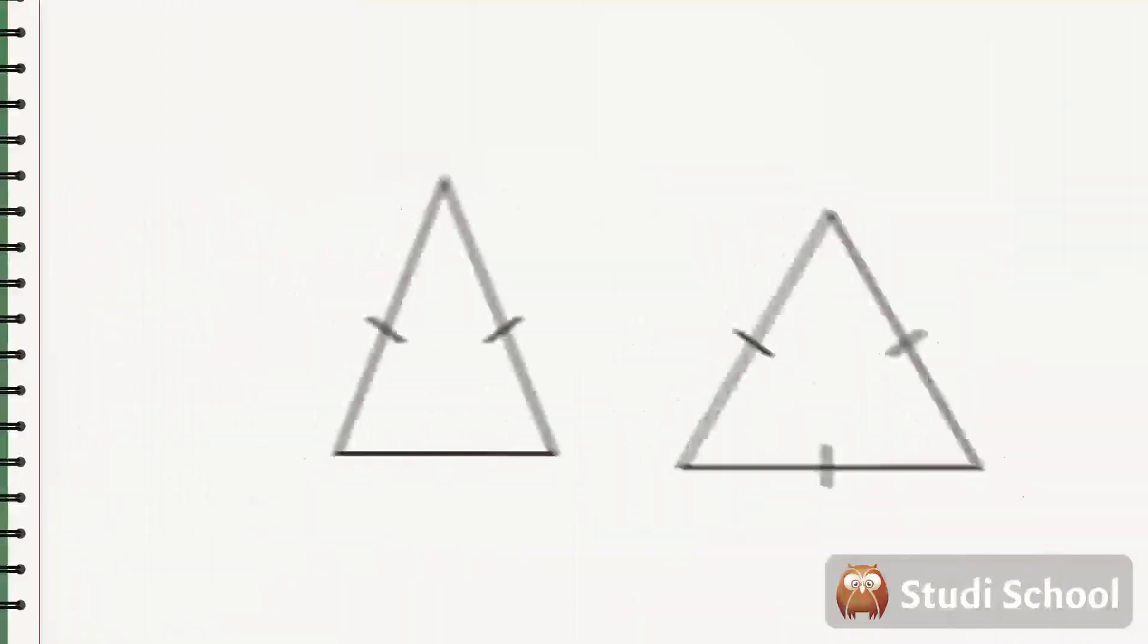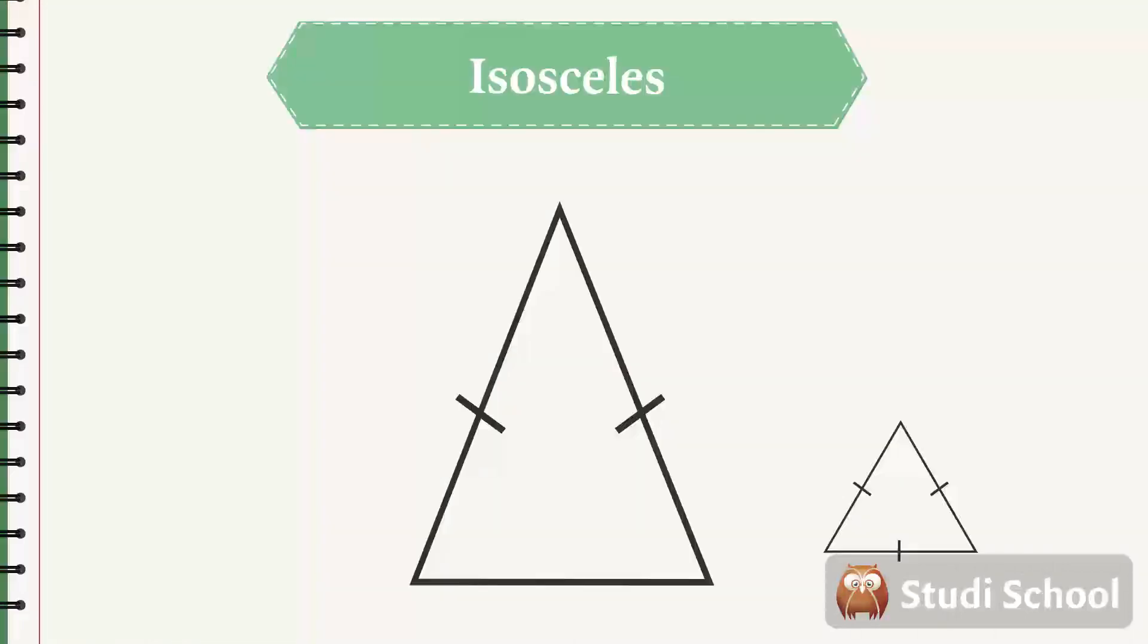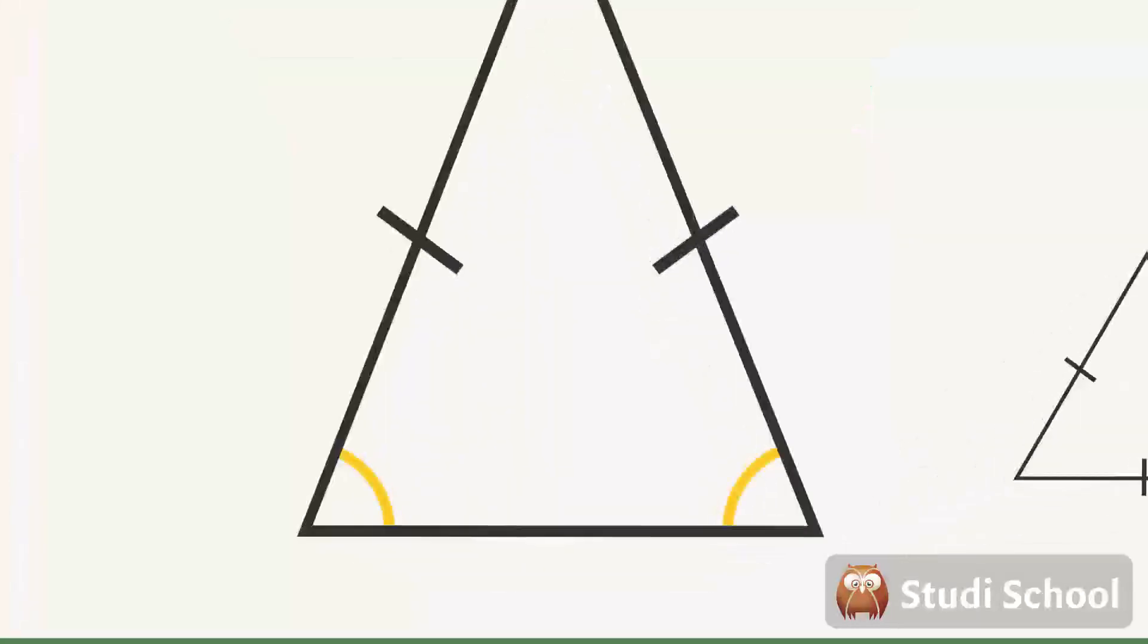The triangle to the left is isosceles. You can tell because two of the sides are marked with crossing lines—they are of equal length. Since the two sides are equally long, these two angles are equally large. We mark that with lines through each of the little angle indicators.